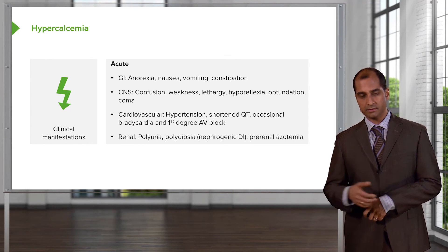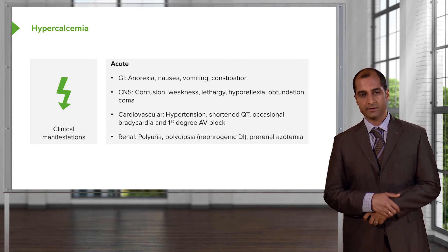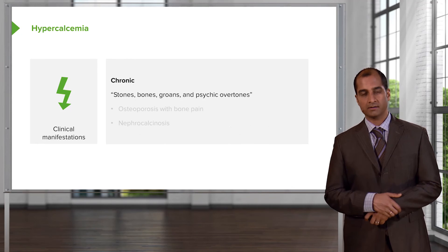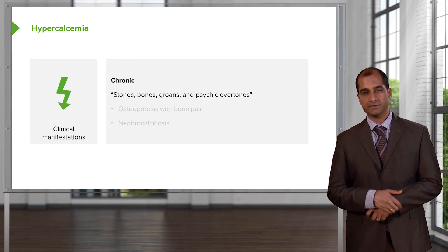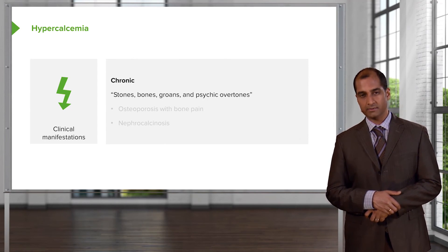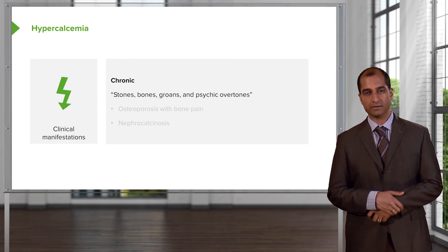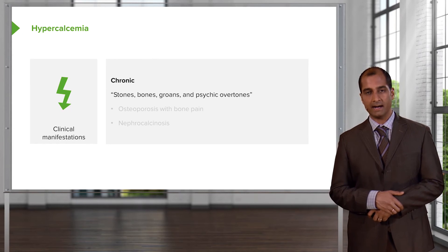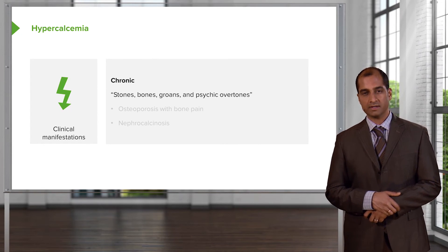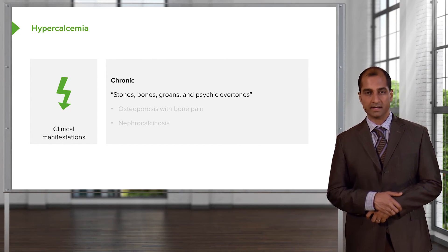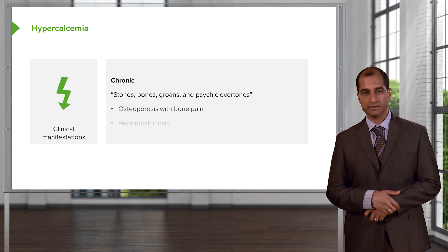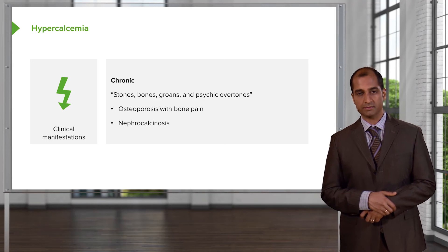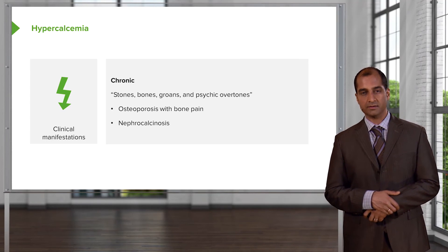These are the clinical manifestations of hypercalcemia. Chronically, the mnemonic you've probably become familiar with — stones, bones, groans, and psychic overtones — tells you the problems associated with chronic hypercalcemia. Stones refers to calcium stones, most commonly calcium oxalate. Bone issues, pain (groans), and psychic overtones. You'll also see osteoporosis with bone pain, and nephrocalcinosis with stones.